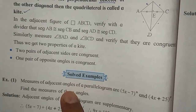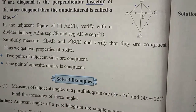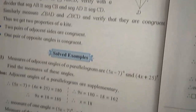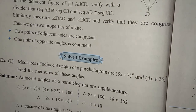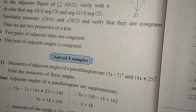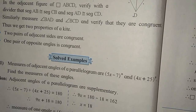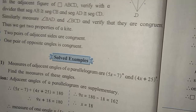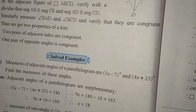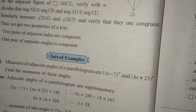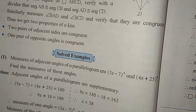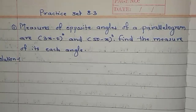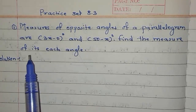After this, some solved examples are given — total three solved examples. You have to go through these examples, where total information is given in detail with proper reasons. Now I will directly go to practice set number 8.3, which has a total of six questions. Let us move to example number one.